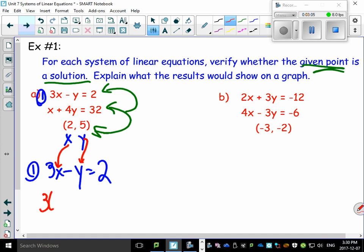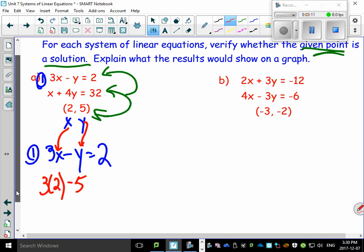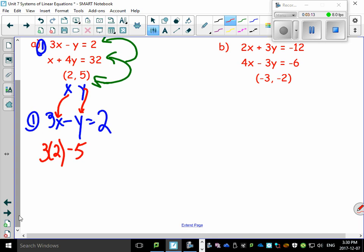So, the x value will go there. The y value goes there. And let's see if this works. This is 3 times 2 minus 5 because there's the substitution. My question is, does that give us 2? Well, 3 times 2 is 6 minus 5. 6 minus 5 is 1. And look at that. This does not equal 2.